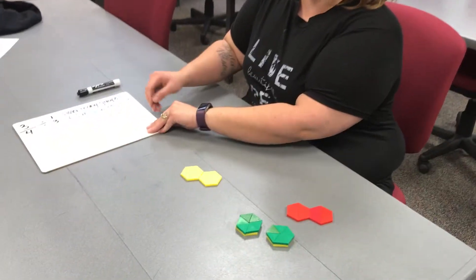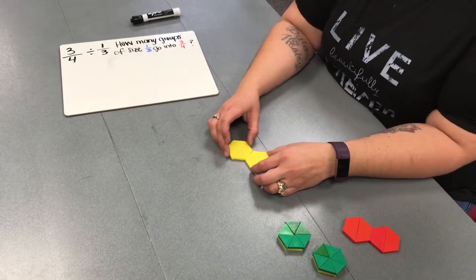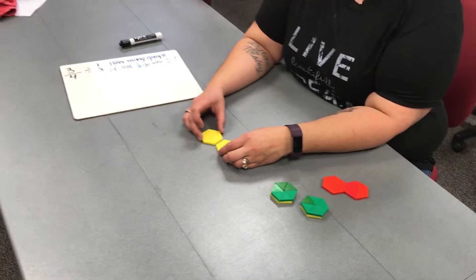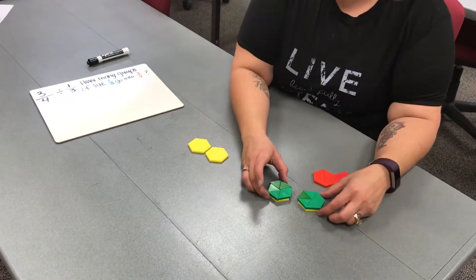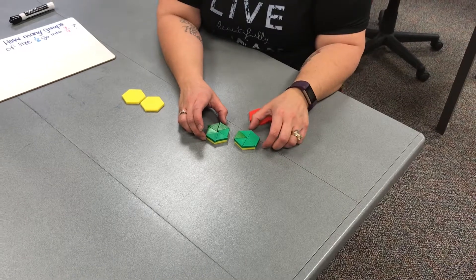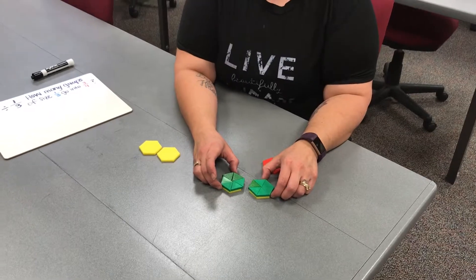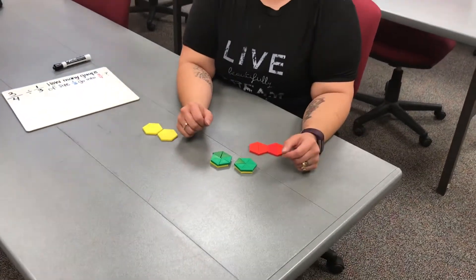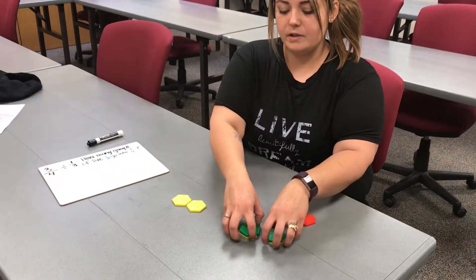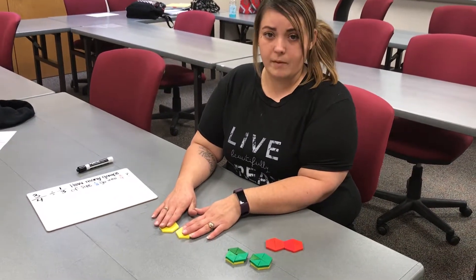Our first step in this process is to determine a whole. I chose to use 2 hexagons because, as you can see here, 2 hexagons can be divided into 12 triangles. 12 is divisible both by 3 and 4, and since they're unlike denominators, we must find a whole that can be divisible by both denominators.